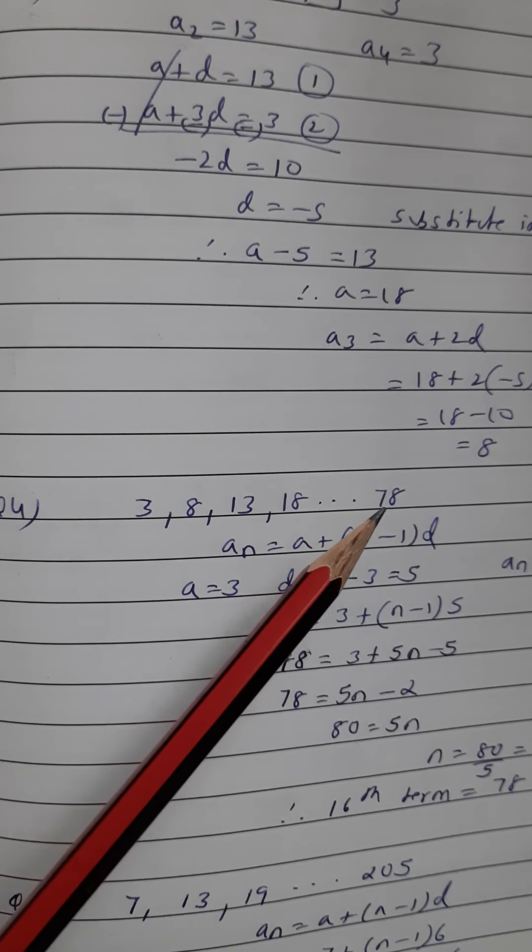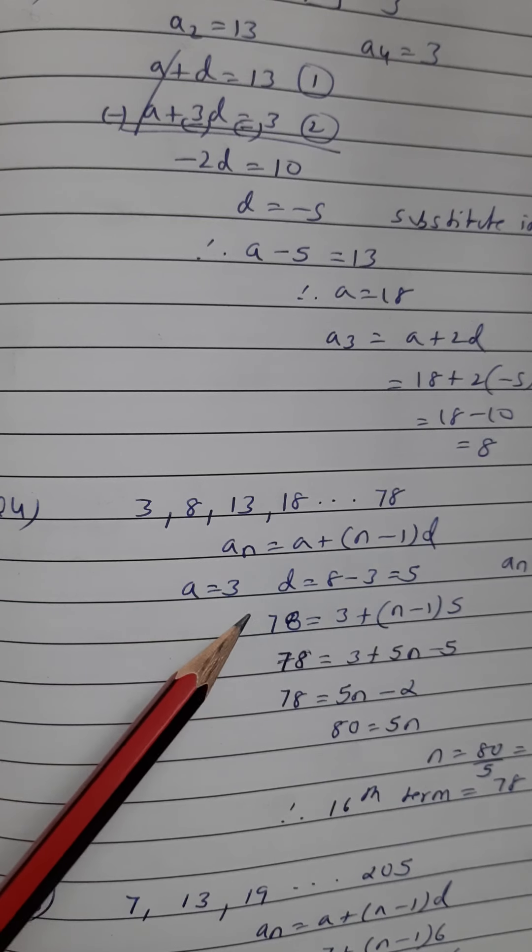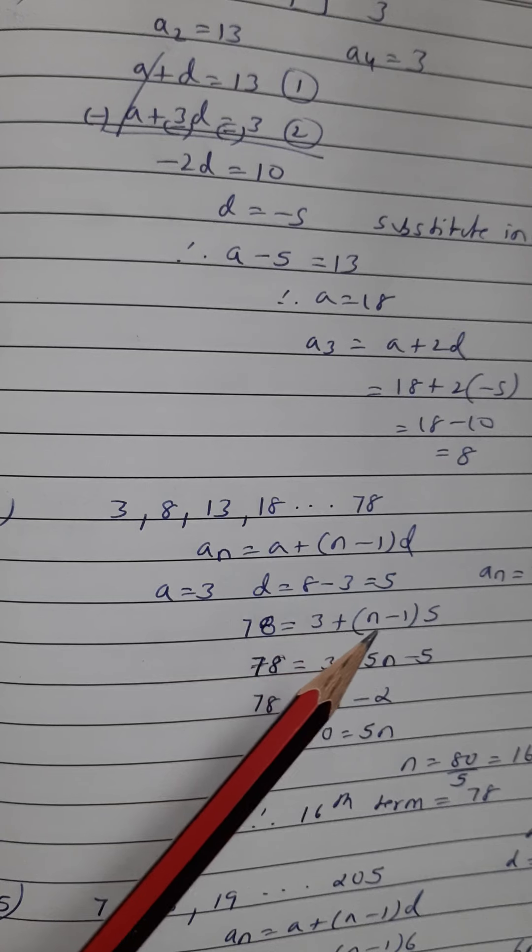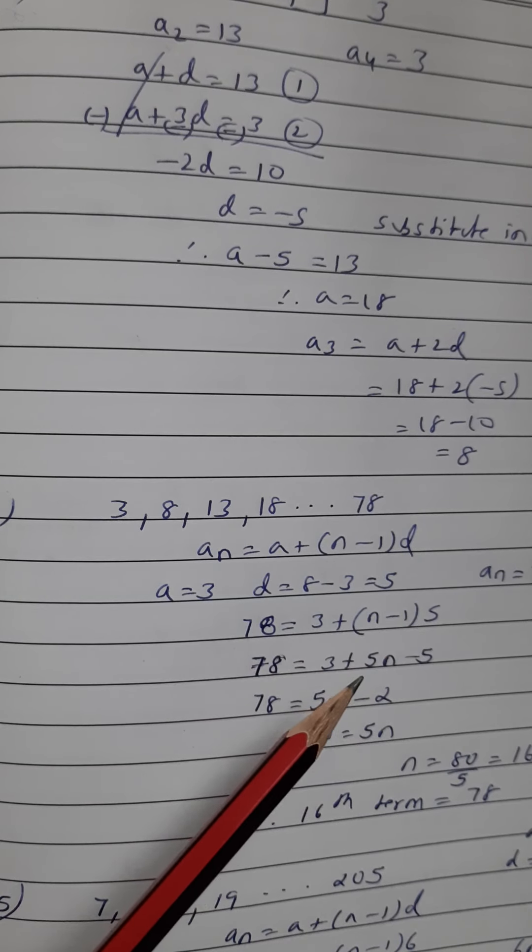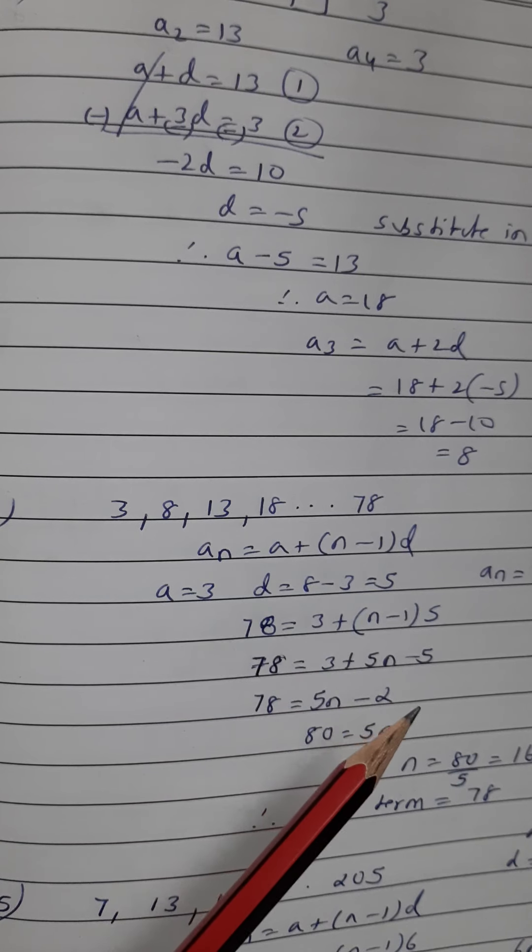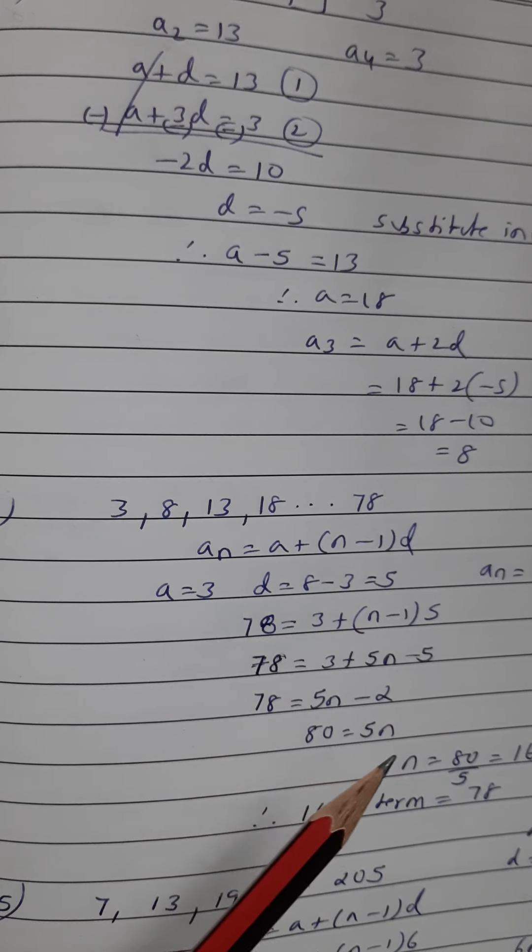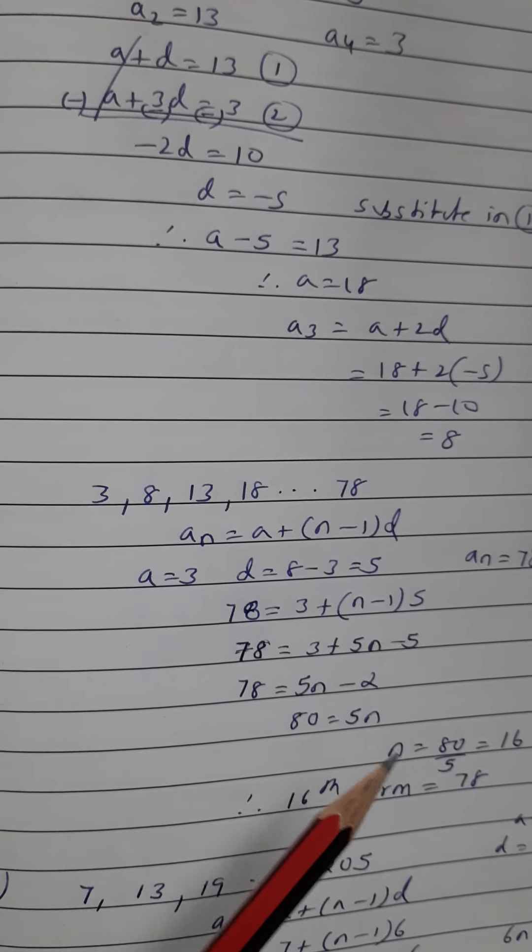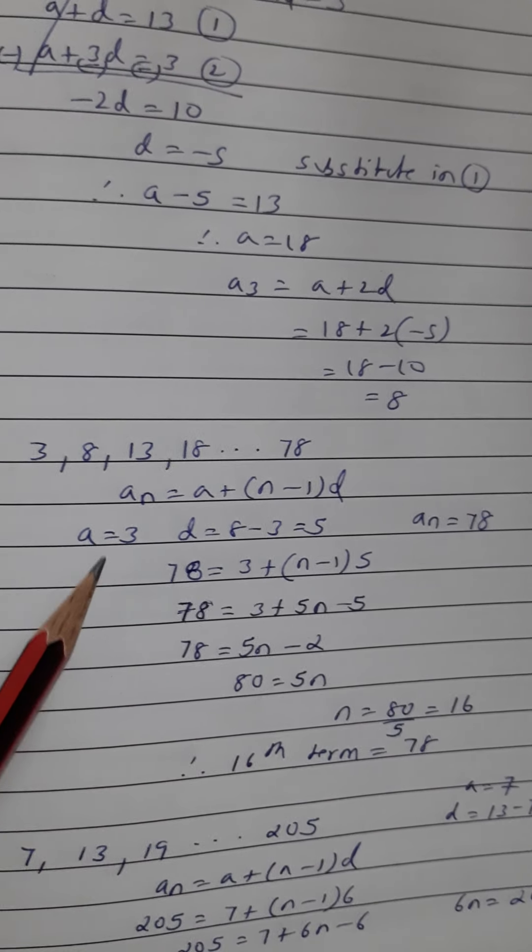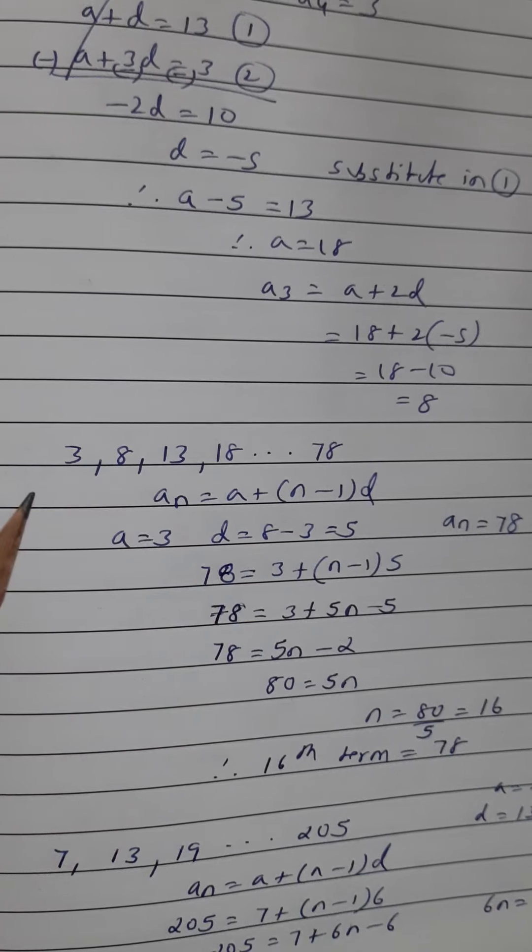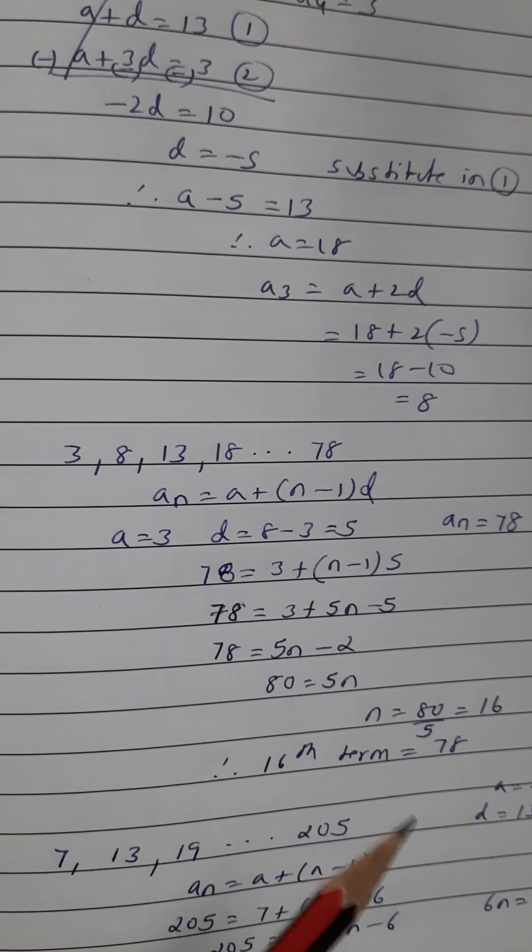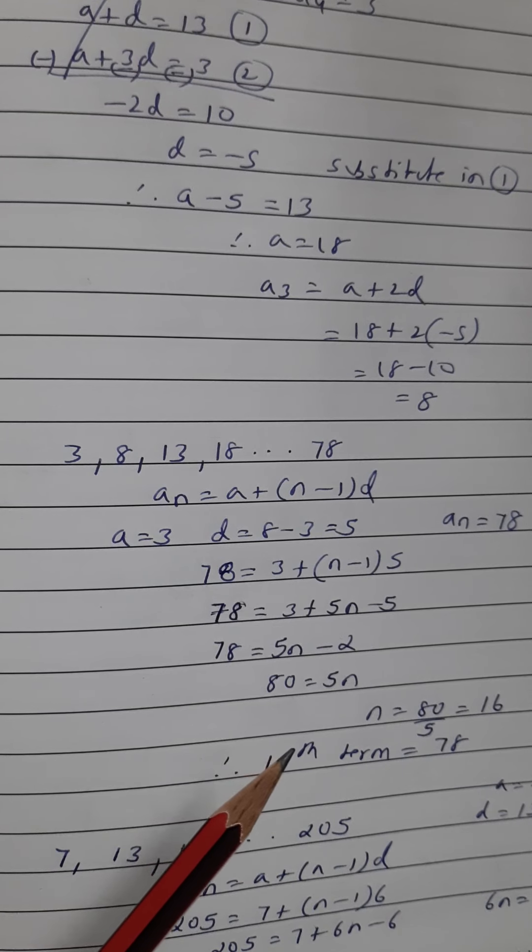So last term, what is given? 78. So instead of a_n, I am going to put 78. So 78 is equal to 3 plus n minus 1 into 5. Open the bracket, we will get 5n and minus 5. 3 minus 5, we will get minus 2. Minus 2 goes to this side to become 80. 80 is 5n, so n's value is 80 divided by 5, so that's 16. So there are 16 terms total. There are how many terms? 16 terms.